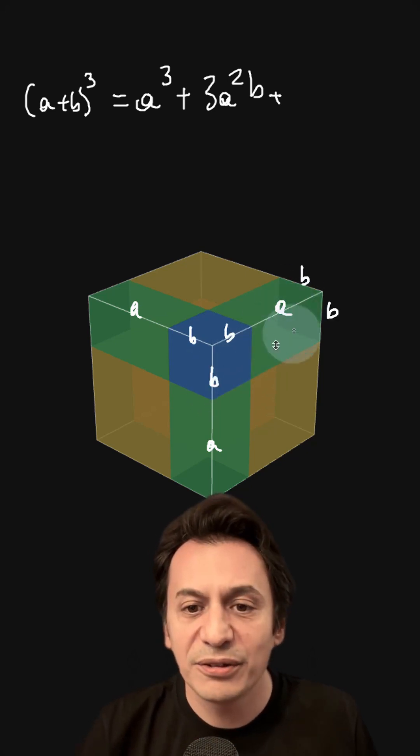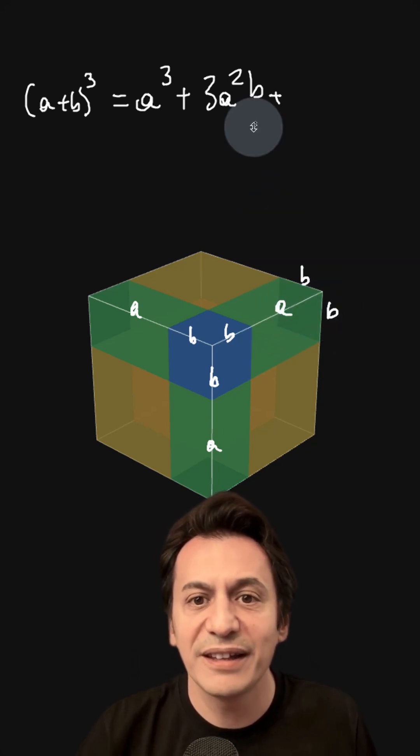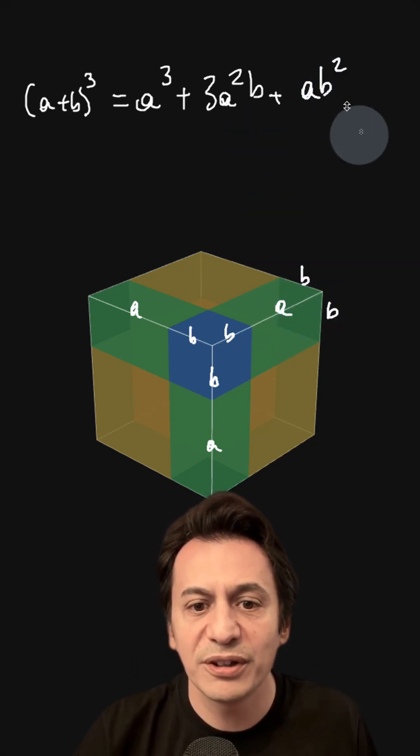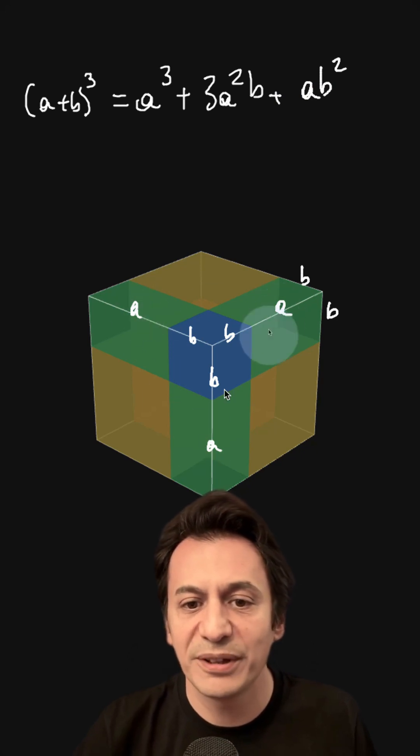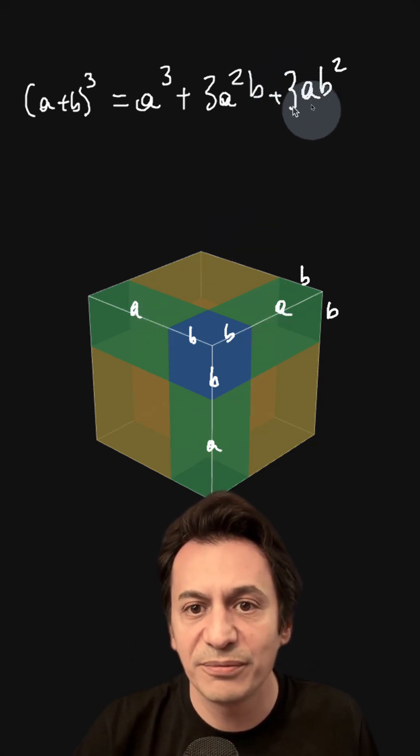Now let's calculate the volume of the green part. Multiplying the edges together: A times B times B, which is AB². But if you look at the colors, there are three green pieces like this, so we have 3AB².